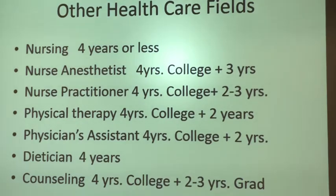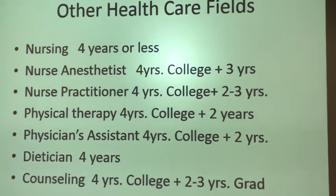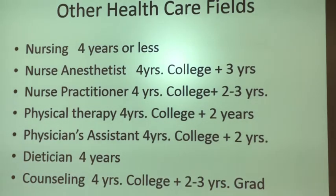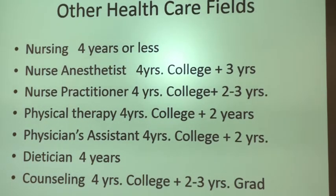For those interested in other health fields: nursing is four years or less. Nurse anesthetist — putting patients to sleep for surgery — is four years of college plus three additional years. Nurse practitioner, an advanced practice nurse who can see patients independently, typically requires four years of college plus two to three years. Physical therapy is four years plus about two additional years. Physician's assistant is usually six years. Dietitian is about four years, and counselor is usually six to seven years.